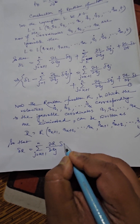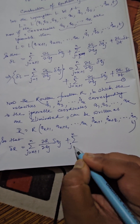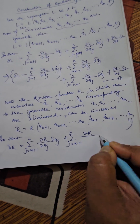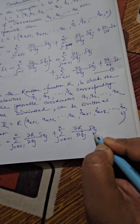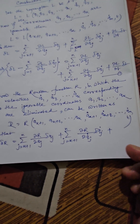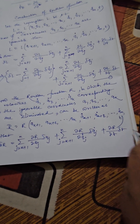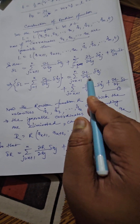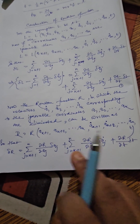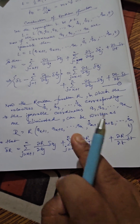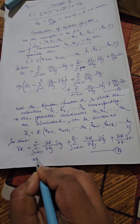The variation of R gives: summation over j from k+1 to n of (del R / del qj) delta qj, plus summation over j from k+1 to n of (del R / del qj-dot) delta(qj-dot), plus the last term. Everything is similar to what we obtained for L in equation 1, only L is replaced by R. This is equation 2.